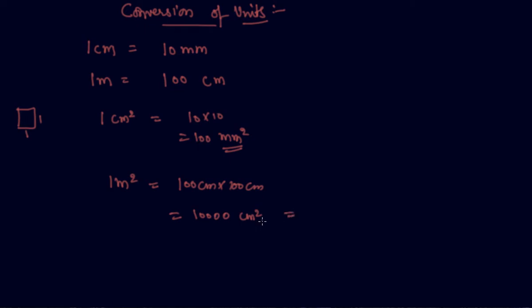To convert centimeters squared to millimeters squared, I will do 10,000 times 100, which equals 10 to the power 6 millimeters squared.